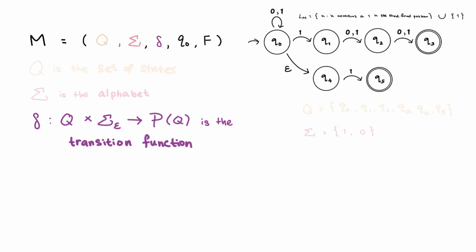Delta is the transition function, and because NFAs can transition on the empty string, this symbol here represents everything recognized by the NFA along with the empty string. And because NFAs can have zero or several choices to transition into, the transition function gives us a set of possible states instead of just the single state. And that's what this P of Q symbol here represents.